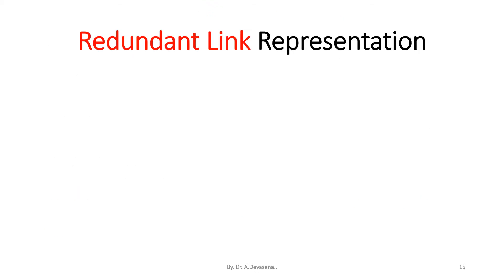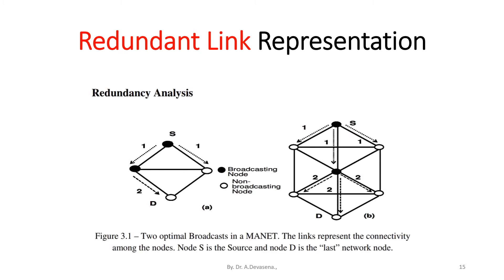Here is a redundant link representation diagram showing two scenarios — two optimal broadcasts in a network. The links represent the connectivity among the nodes. Node S is the source node and node D is the destination node.